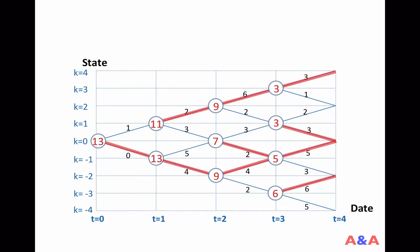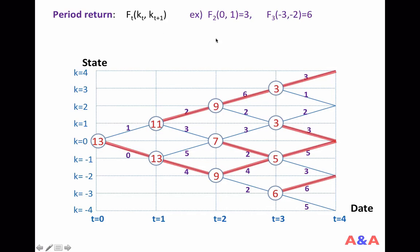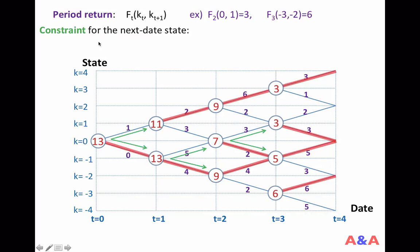To mathematically formulate what we were doing implicitly, let me introduce some notions. The first is period return — basically these numbers on the path, the immediate return you get after making decisions at each date. The period return at date t depends on the starting state and the ending state. For example, at date 2, if the starting state is 0 and the ending state is 1, the period return is 3. At date 3, if the starting state is negative 3 and ending state is negative 2, the period return is 6.